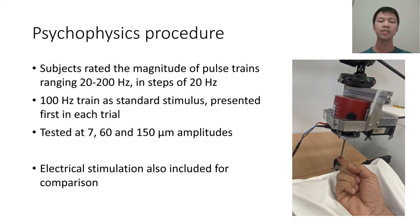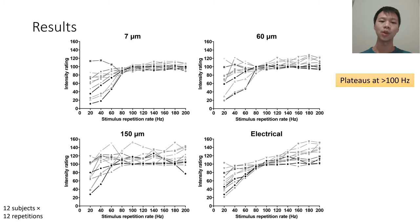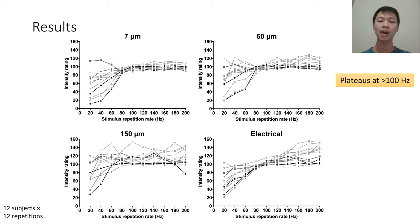Our results showed that perceived intensity increased when the repetition rate of the stimuli — and thus spike rate within the same population of afferents — increased from 20 to 100 Hz, which then plateaued beyond this point. This effect did not appear to be sensitive to the mix of afferent types that were recruited, as the same trend was observed at different amplitudes.